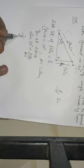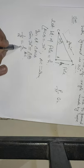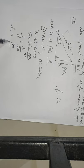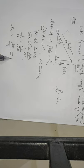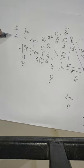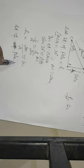Sin 30, how much? 1 by 2. AB is H and AC is 20. So 1 by 2 equals H upon 20. H equals 20 by 2 equals 10. Hence, the height of the pole is 10 meters.